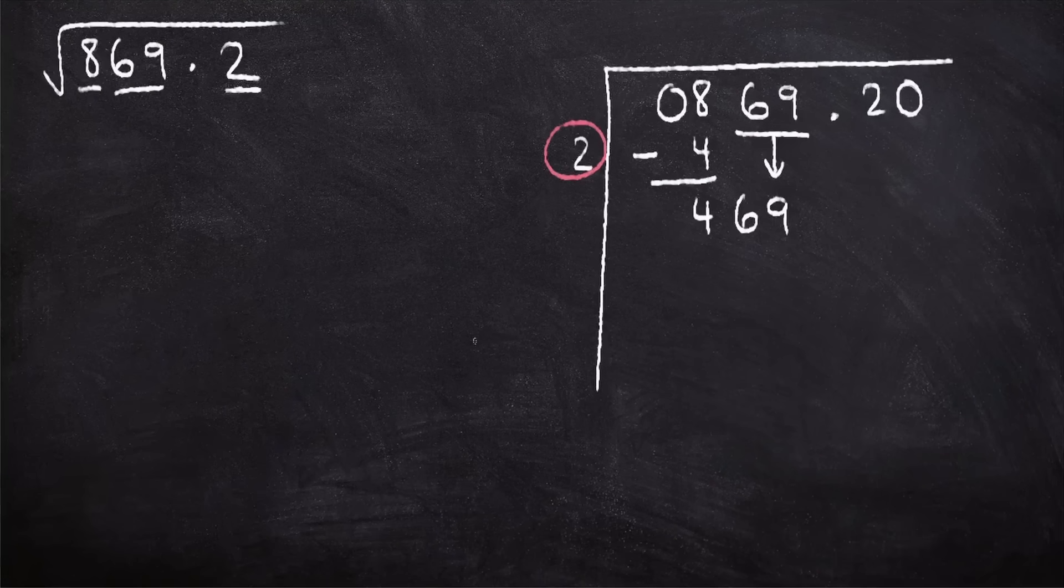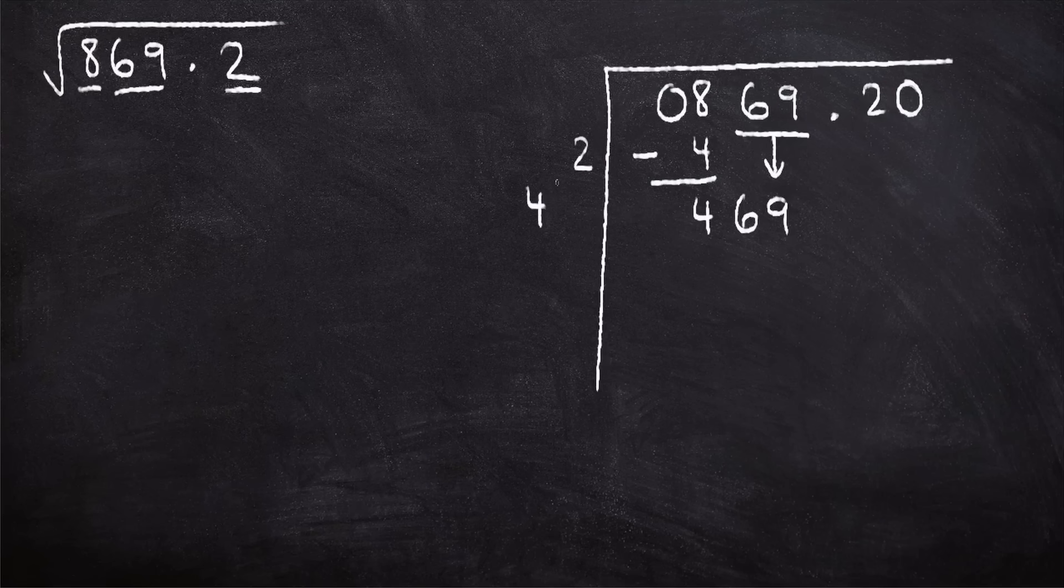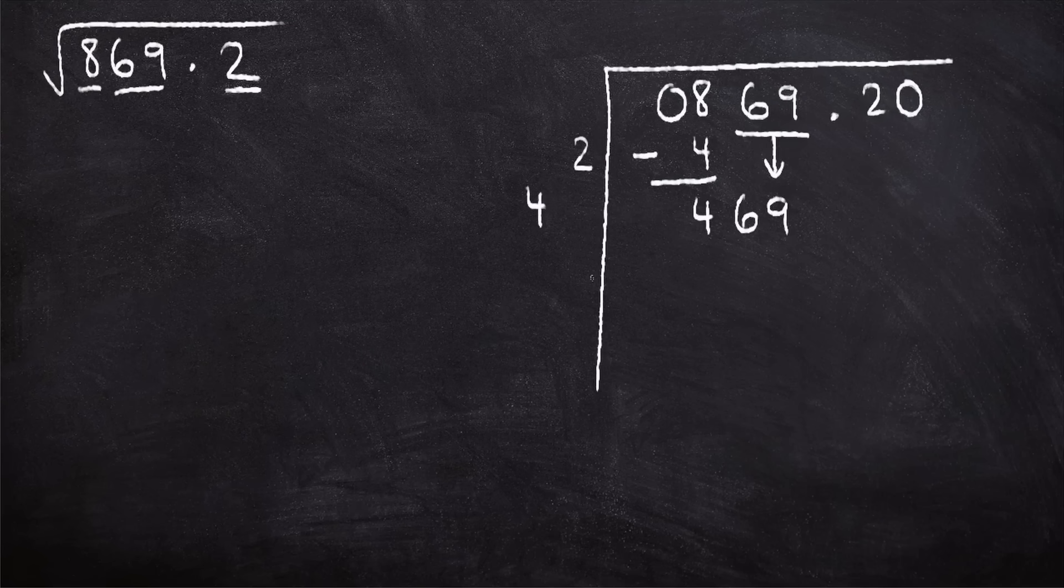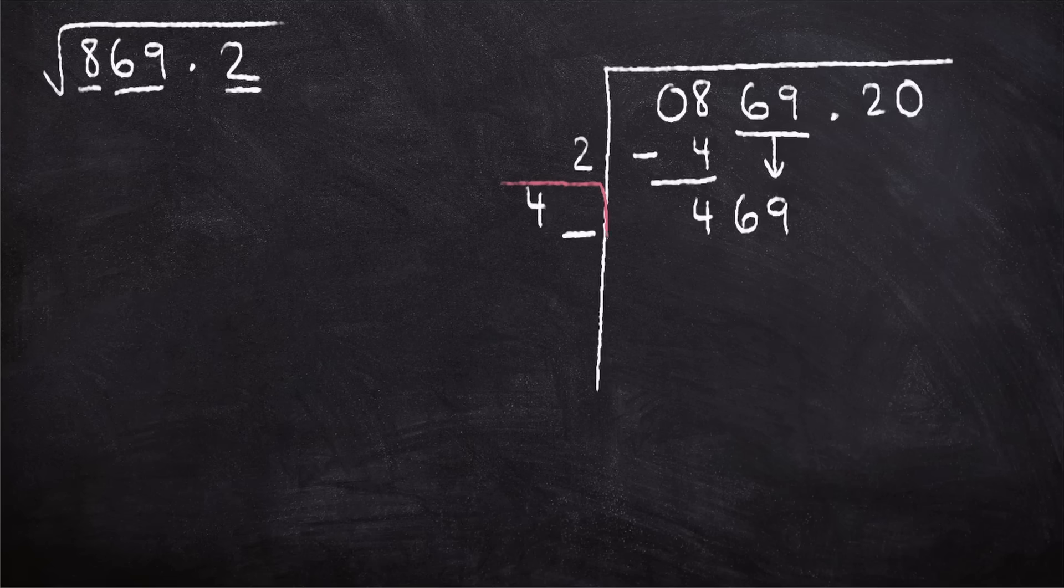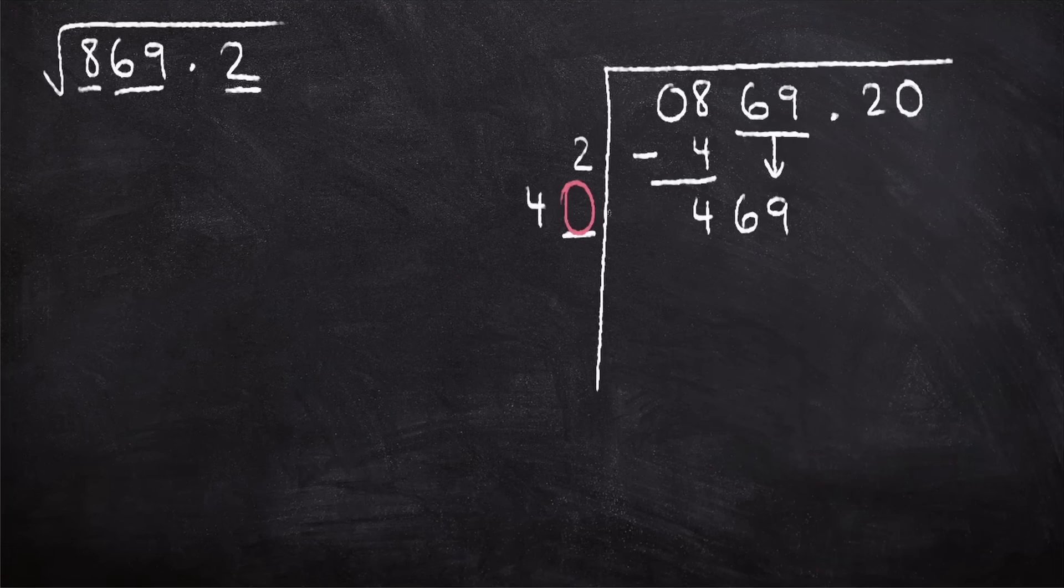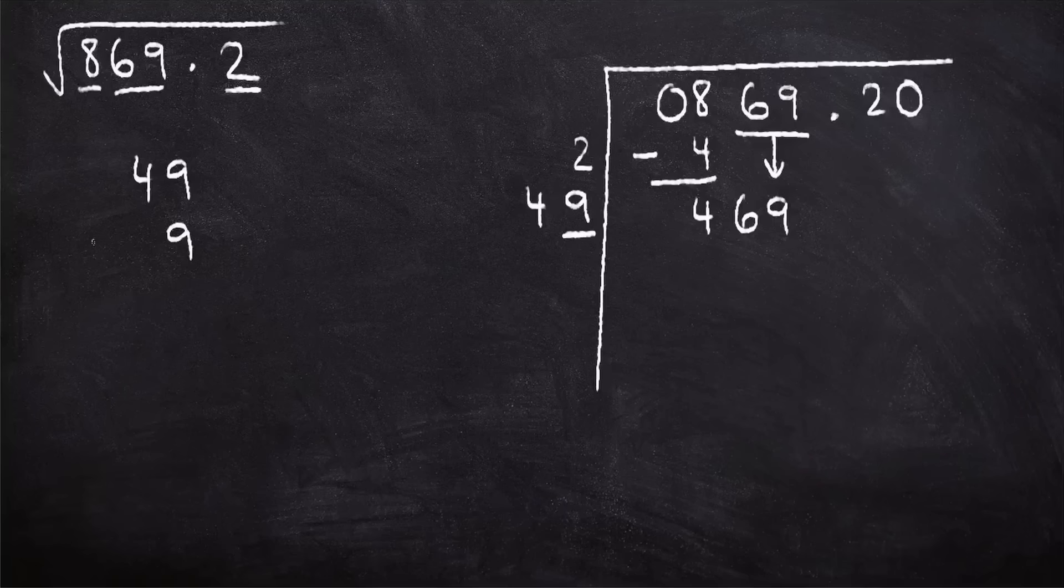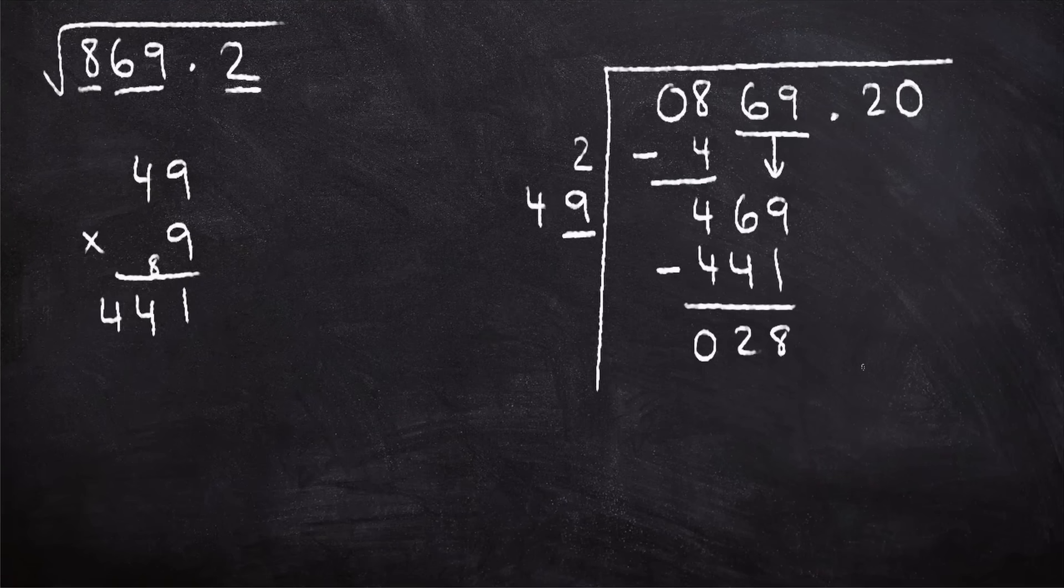Now we're going to take this digit here and we're going to double it. So we're going to get 4 and we're going to put that in the bottom left just like this. Now we've got a missing space here and in this missing space is going to be a digit. And when you take this digit and multiply by the entire number, we should end up with a number less than 469. But this digit here has to be the largest digit you possibly could put in, such that this multiplied by this is less than this. So let's say we put in a 9. 49 multiplied by 9 gives us 441, and that is the largest number that we can make. So we're going to subtract that from 469, and we end up with 28.